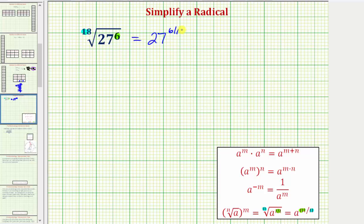Notice when we do this though, the fraction of 6/18ths simplifies to 1/3rd, and therefore we can rewrite this as 27 raised to the power of 1/3rd.